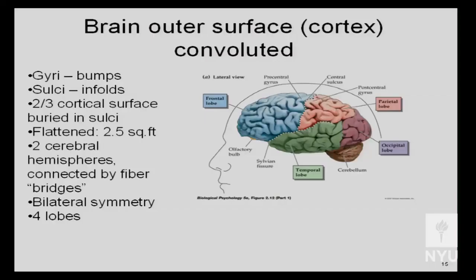We have two hemispheres — right and left. The right hemisphere controls everything on the left side of the body and vice versa. They communicate through a structure called the corpus callosum, a huge highway of axons going from left hemisphere to right hemisphere, located right in the center and visible when you cut the brain in the sagittal plane.